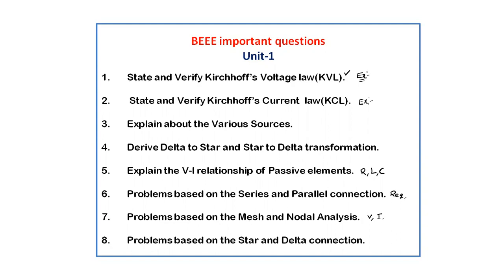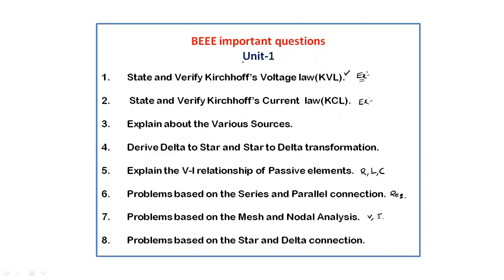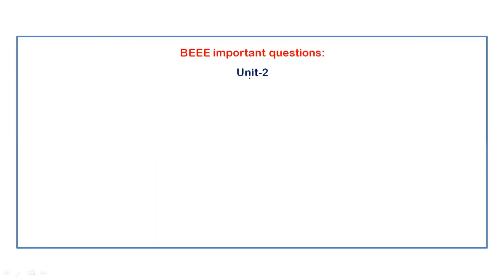Next, problems based on star and delta connections — if a network is connected in the form of star or delta, you have to use the transformation method to reduce the network. These are the total unit 1 long answer questions; concentrating on these will definitely get you good marks.